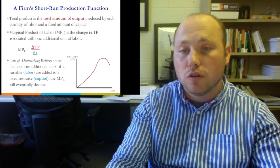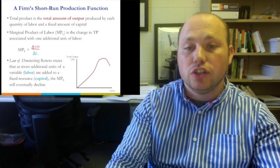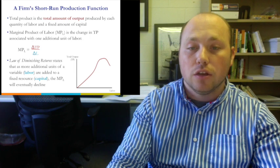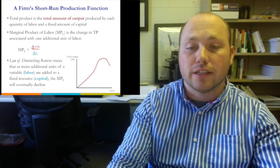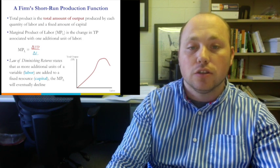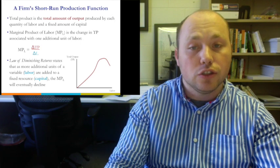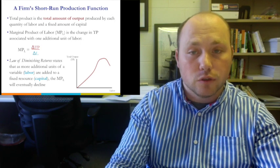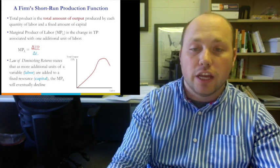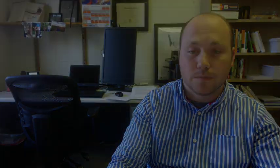We calculate marginal product of labor as the change in total product divided by the change in labor, using the Greek letter delta to represent change. So marginal product of labor equals ΔTP / ΔL — the additional product divided by the additional amount of labor.